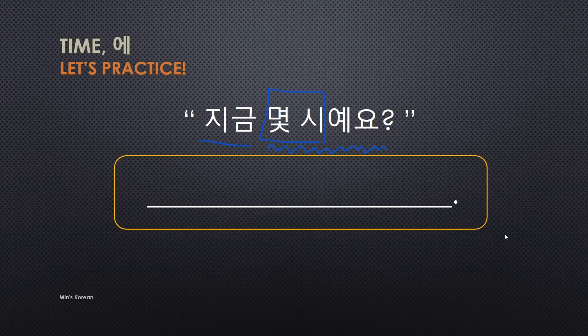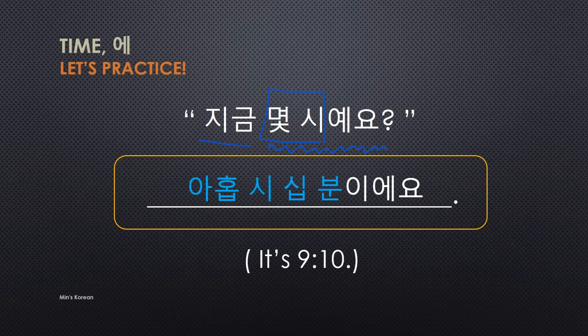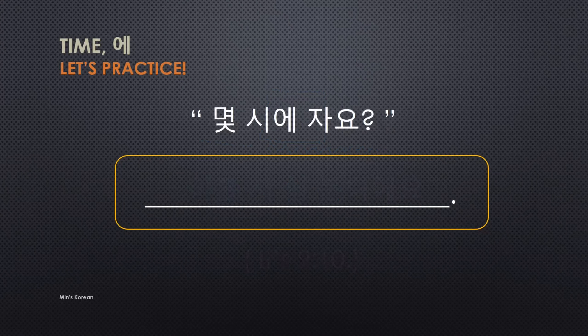It's 9:10. 9 is hours, so use Native Korean: 아홉 시. And 10 is minutes, so use Sino-Korean: 십. So the answer is 아홉 시 십 분이에요. This is a noun, so you use 이에요 to make a statement. And next question: 몇 시에 자요? — 몇 시에 means 'at what time,' and 자요 comes from 자다, meaning 'to sleep.' So: What time do you sleep?